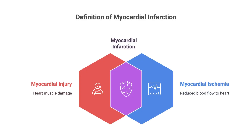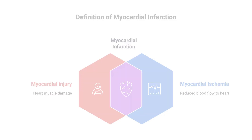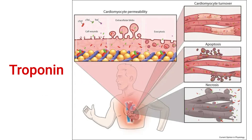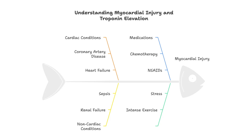Is there a special definition for MINOCA? Before we define MINOCA, we need to understand the universal definition of a myocardial infarction, because MINOCA is a subset of MI. To diagnose myocardial infarction, we need two things: myocardial injury and myocardial ischemia. Myocardial injury is an elevation of cardiac biomarkers — troponin being the most commonly used and reliable. Troponin is released into the blood when myocardium is injured or stressed, and this elevation can stem from many causes, both non-cardiac and cardiac.